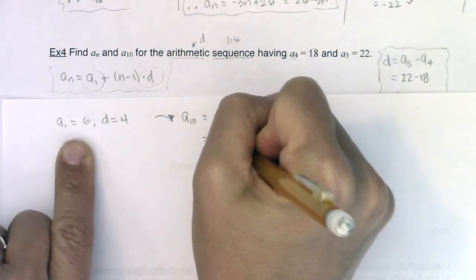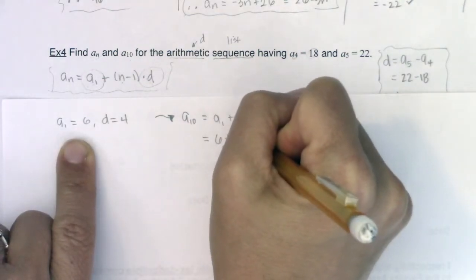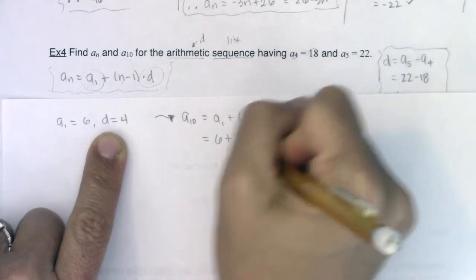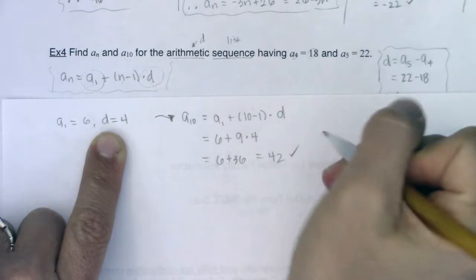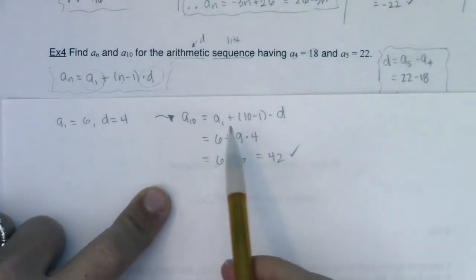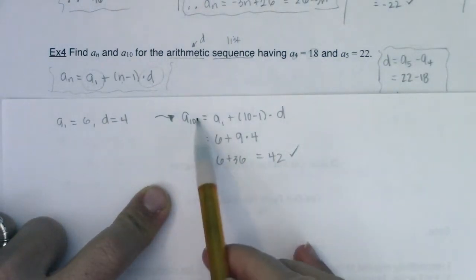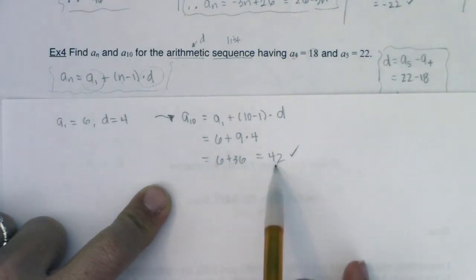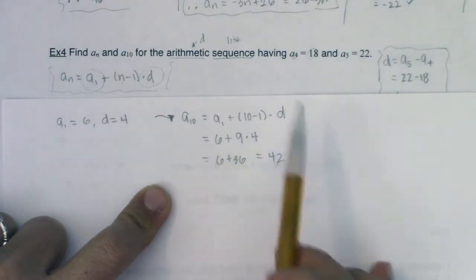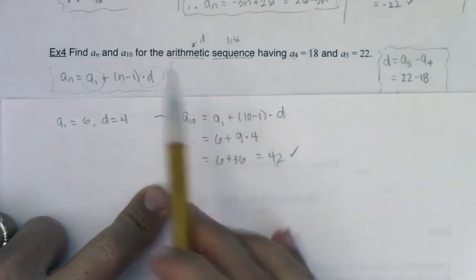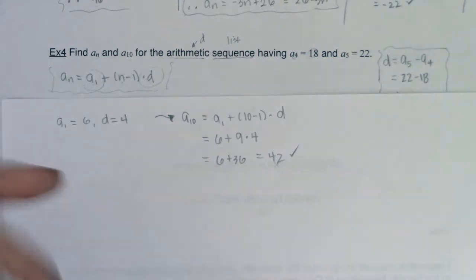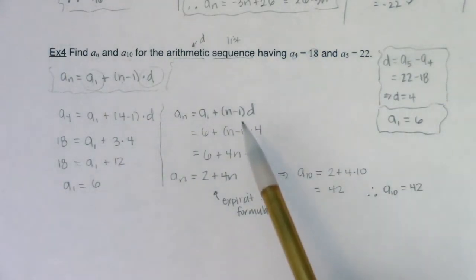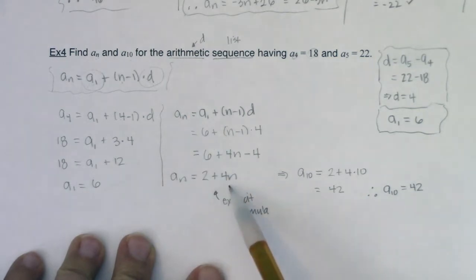I could have said that was equal to a_1 plus 10 minus 1 times d. So in this case we would have had 6 plus 9 times d was 4 so we get 6 plus 36 which lo and behold is 42. But again if you go after a_10 first you're limited just to a_10. That's it. You kind of just stop at this point you say alright I have a_10 is 42 and you still have to go back and find a_n to finish the question out which is why personally I think it's just faster and more efficient to find a_n first and then plug in n equaling 10.